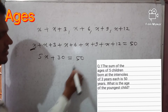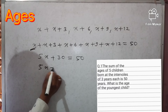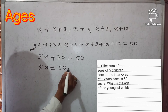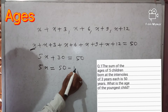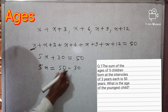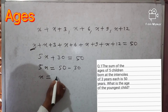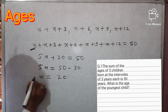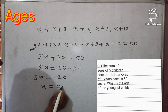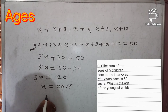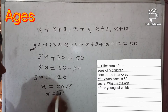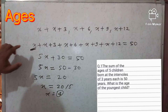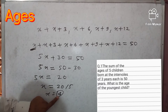So 5x plus 30 equals 50. Therefore 5x equals 50 minus 30, which is 20. So x equals 20 divided by 5, which gives x equals 4. The youngest child is x, so the youngest child is 4 years old.